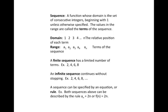So the domain is 1, 2, 3, 4 up to n — the relative position of each term — and the range is expressed as a_1, a_2, a_3, a_4 up to a_n, and those are the terms of the sequence. So if we reference a_3, we mean the third term in the sequence and we mean the actual value of that term.